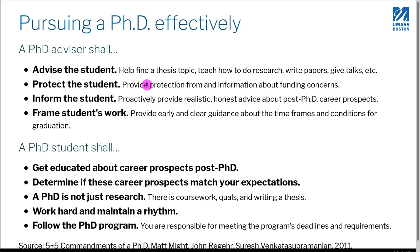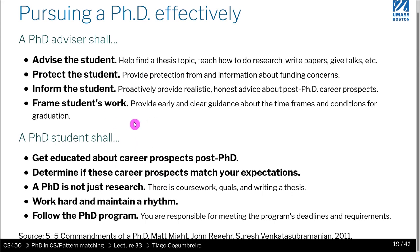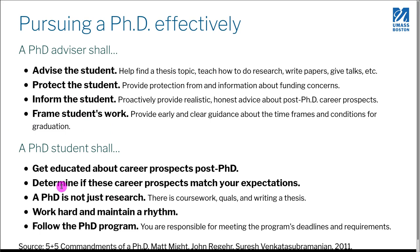This is a list on how to pursue a PhD effectively. It comes from the five commandments written by Matt Might, John Rieger, and Suresh Venka. These are essentially five things that the PhD advisor should do and the PhD student should do. I like this guide as it gives you a baseline of expectations — what you as a student should expect from your supervisor, and what your supervisor should expect from you. This is something you should discuss if you're interested in doing a PhD with someone.